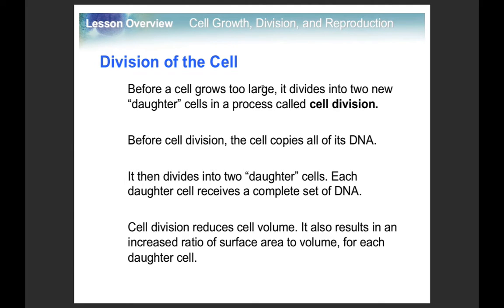Today's lecture is going to be on cell division. Basically what happens is one cell grows really big, makes an extra copy of its DNA, and splits into two identical cells. These cells are now called the daughter cells.